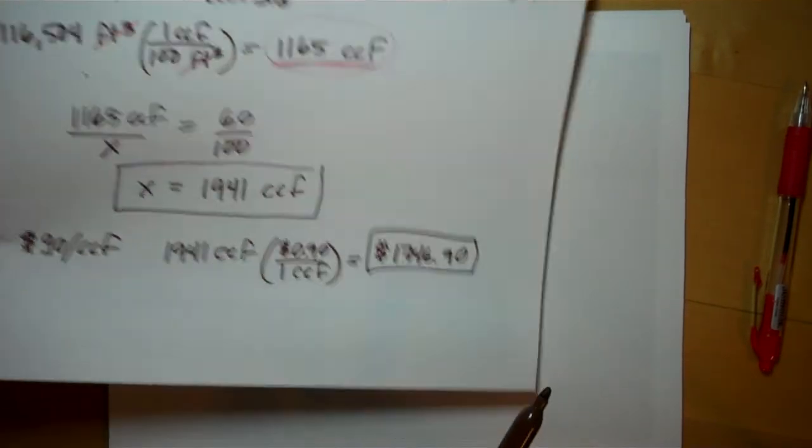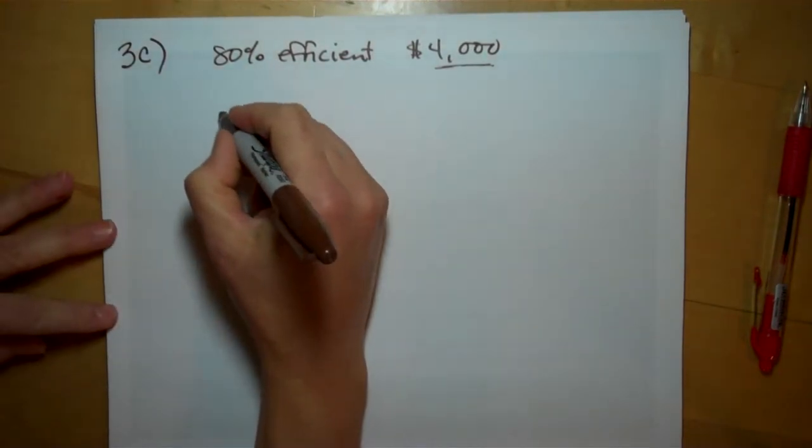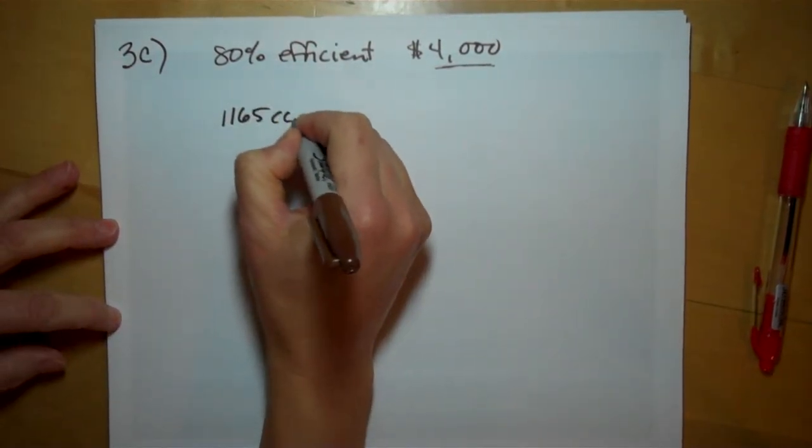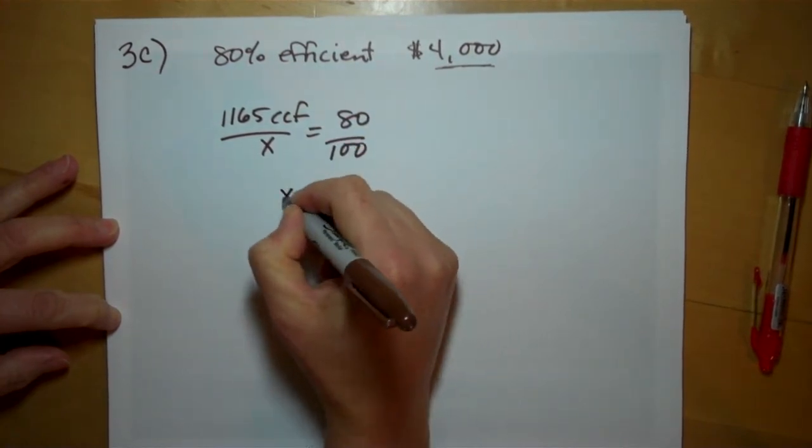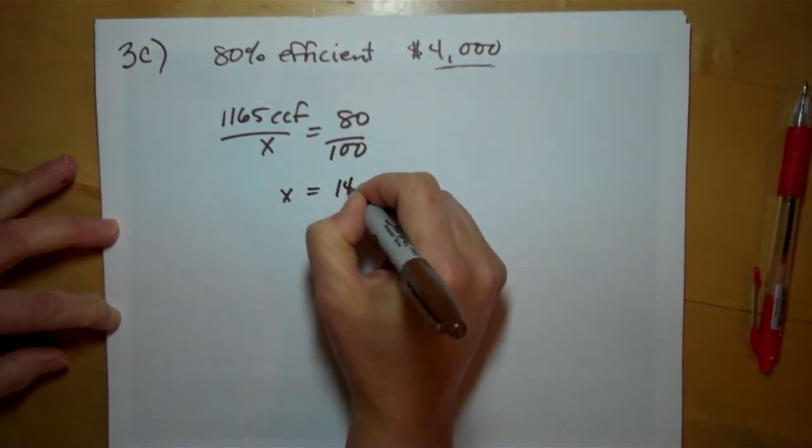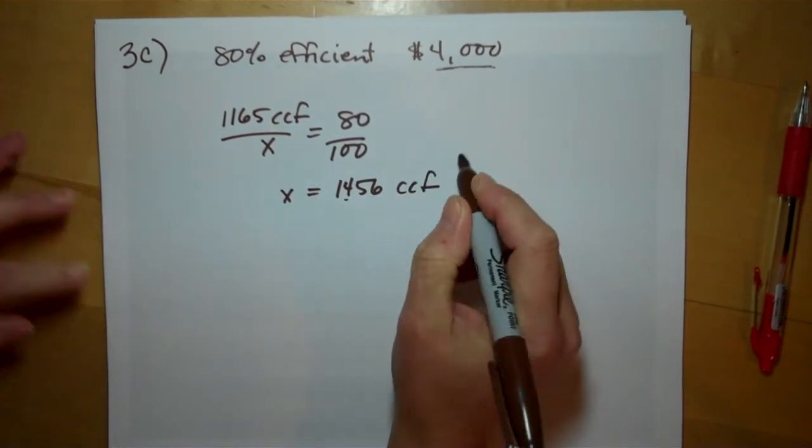Well, if our furnace is now 80% efficient, then we only need 1,456 ccf.